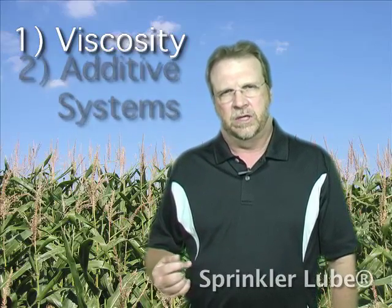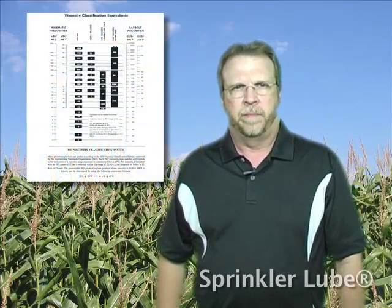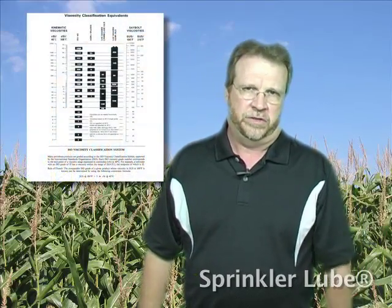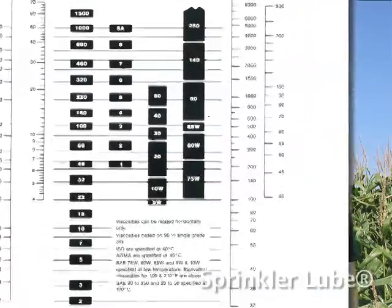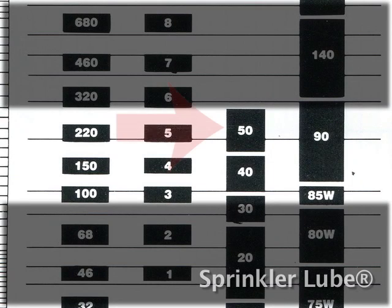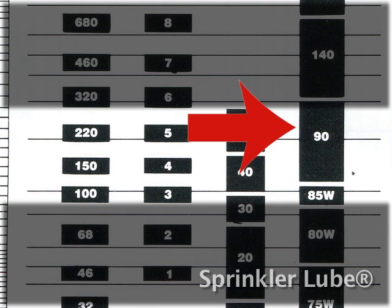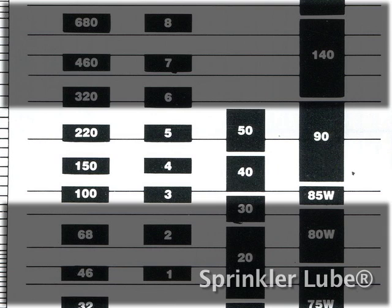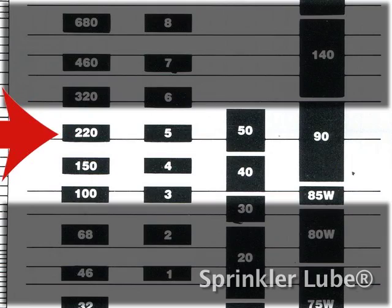Here we have a viscosity equivalence chart. My question to you: what is the difference between 50-weight motor oil and 90-weight gear oil? For the most part, the answer we hear is 40. But if you look at the SAE engine oil classification and slide across to the SAE gear oil classification, you will see that they are both in the same viscosity range. You will also see that an AGMA 5 or an ISO 220 are in the same range.